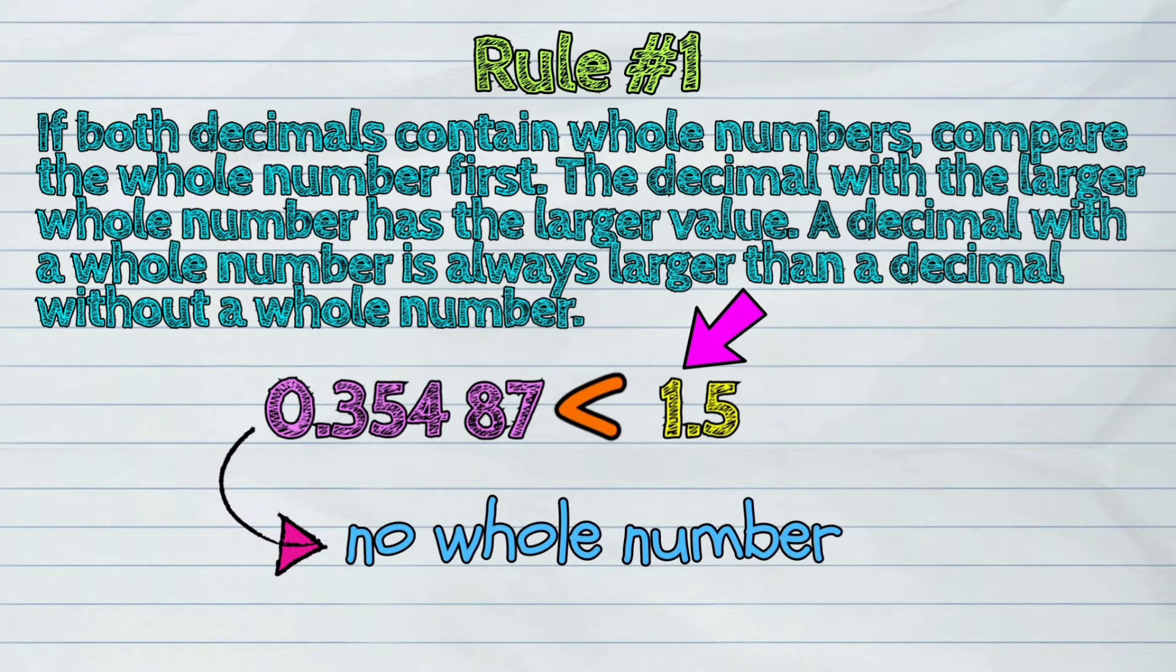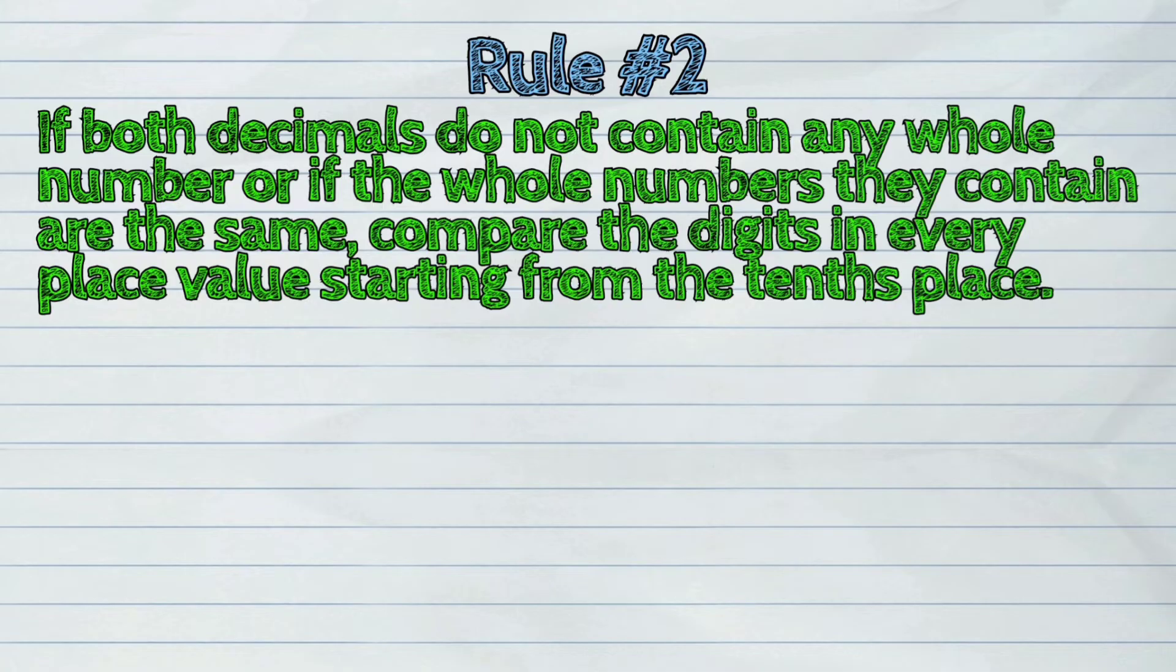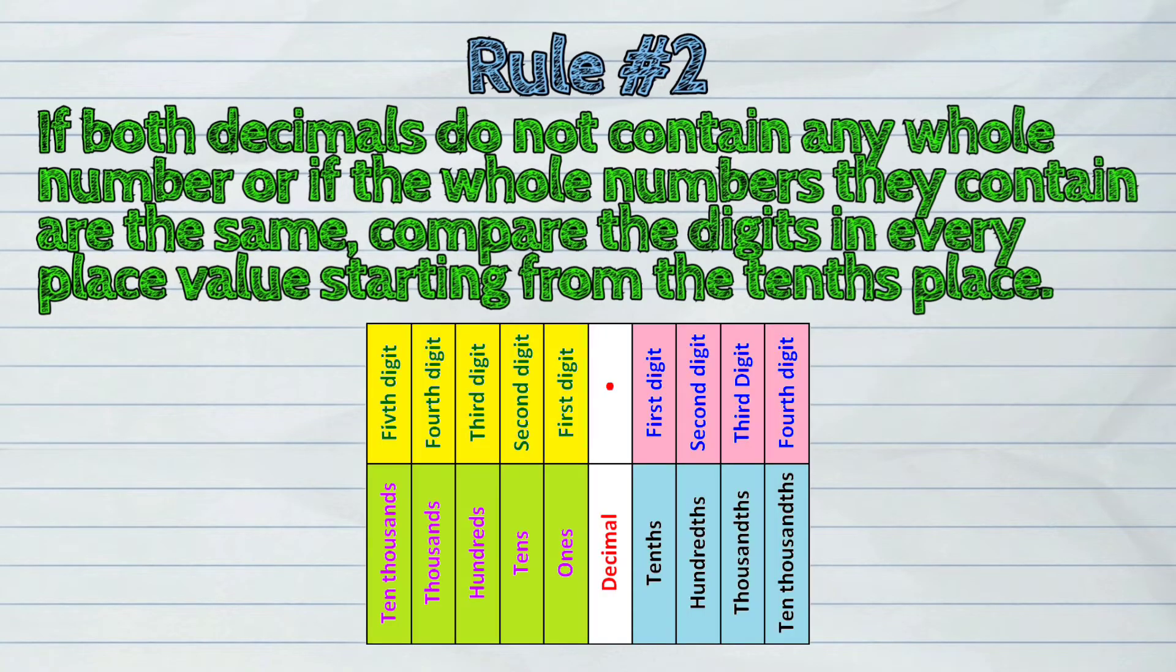Let us now proceed to the second rule. If both decimals do not contain whole number or if the whole numbers they contain are the same, compare the digits in every place value starting from the tenths place.